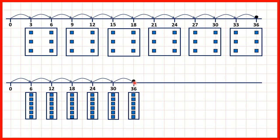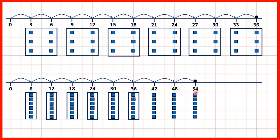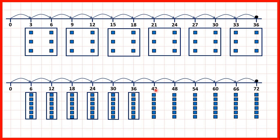So 12 times 3 is 36, but 6 times 6 is also 36. To finish off our 6 times table we get 42, then 48, 54, 60, 66 and 72 — and all of these numbers would also be in our 3 times table if we kept on counting in 3s.